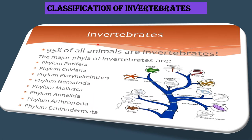Invertebrates can be found on land and in water bodies such as ponds, rivers, streams and oceans. They are further subdivided into 8 major phyla: Porifera, Cnidaria, Platyhelminthes, Nematoda, Mollusca, Annelida, Arthropoda and Echinodermata. Invertebrates account for about 95% of all animal kingdom. Amongst these, the insects alone account for a million species.